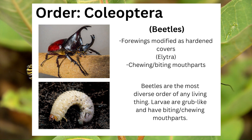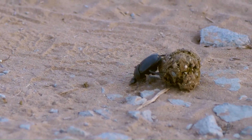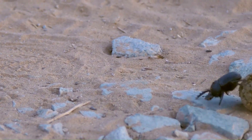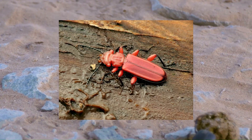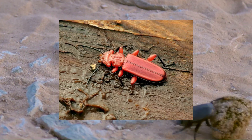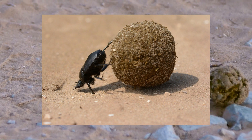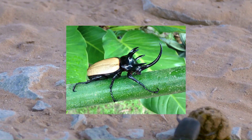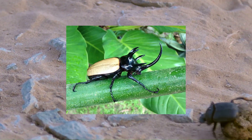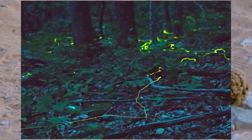The larvae of beetles are called grubs and have chewing biting mouthparts. Beetles have a myriad of useful adaptations. To list a few: swimming legs as seen in diving and water beetles, aposematism as seen in flat bark beetles, star position navigation used by dung beetles, acid spraying used by bombardier beetles, horns used by rhinoceros and Hercules beetles, and bioluminescence seen in fireflies and glowworms.